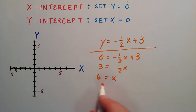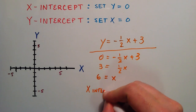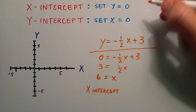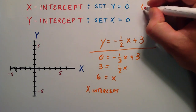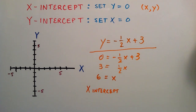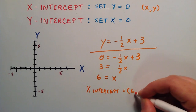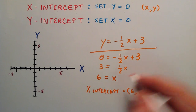So our x-intercept has an x-component of 6. The x-intercept is represented as an ordered pair with an x and y component. Our x-component is 6, and our y-component is 0, since that's the value we set for y to find x. So the x-intercept is the ordered pair (6, 0).